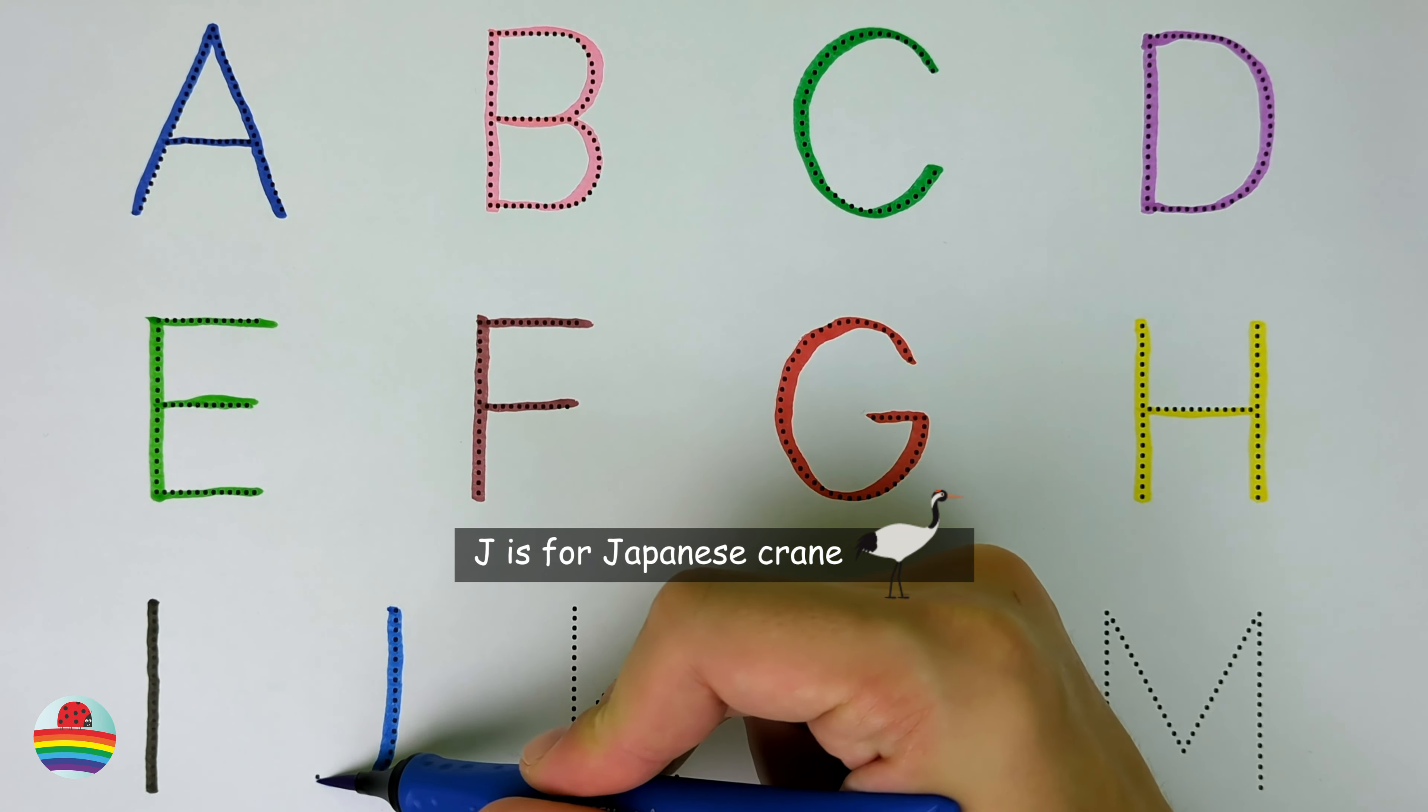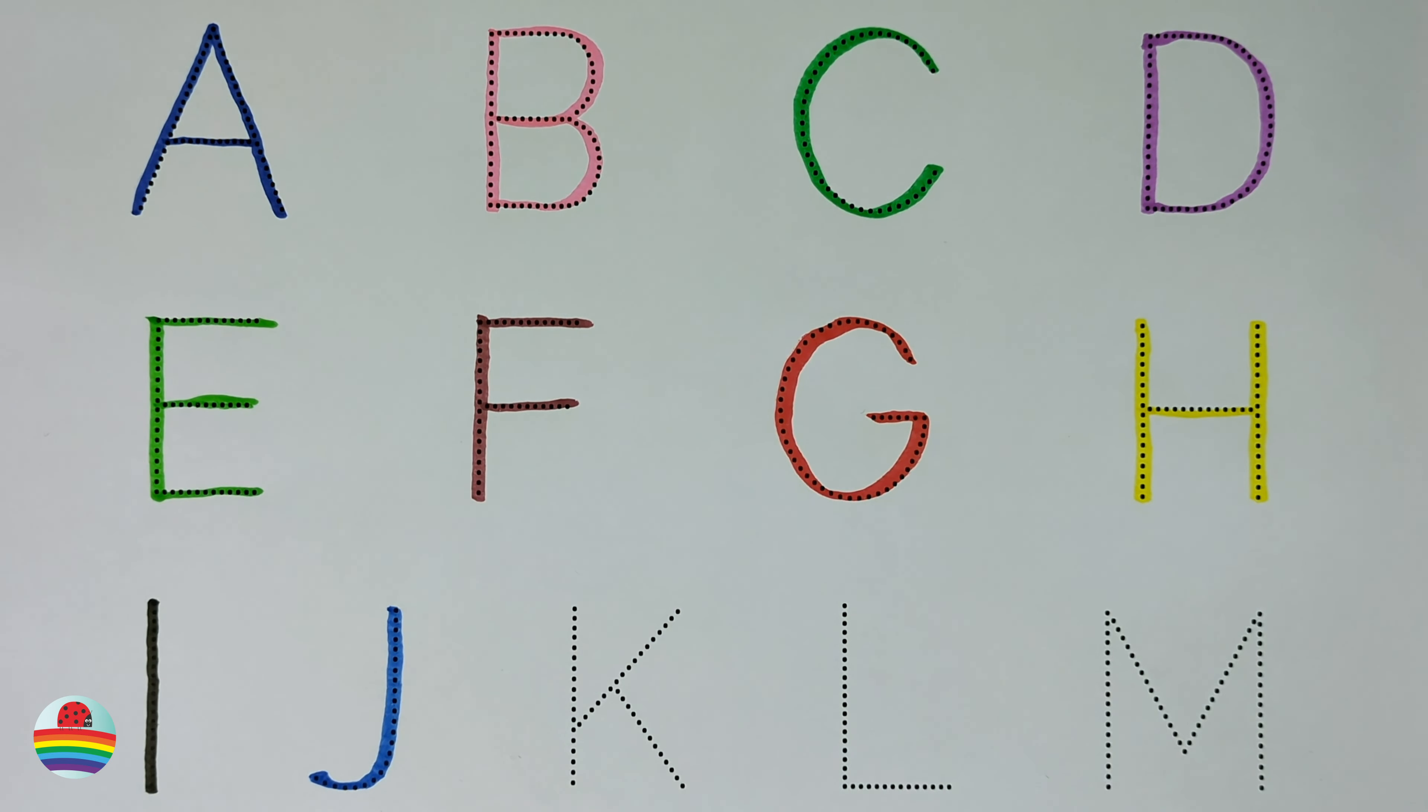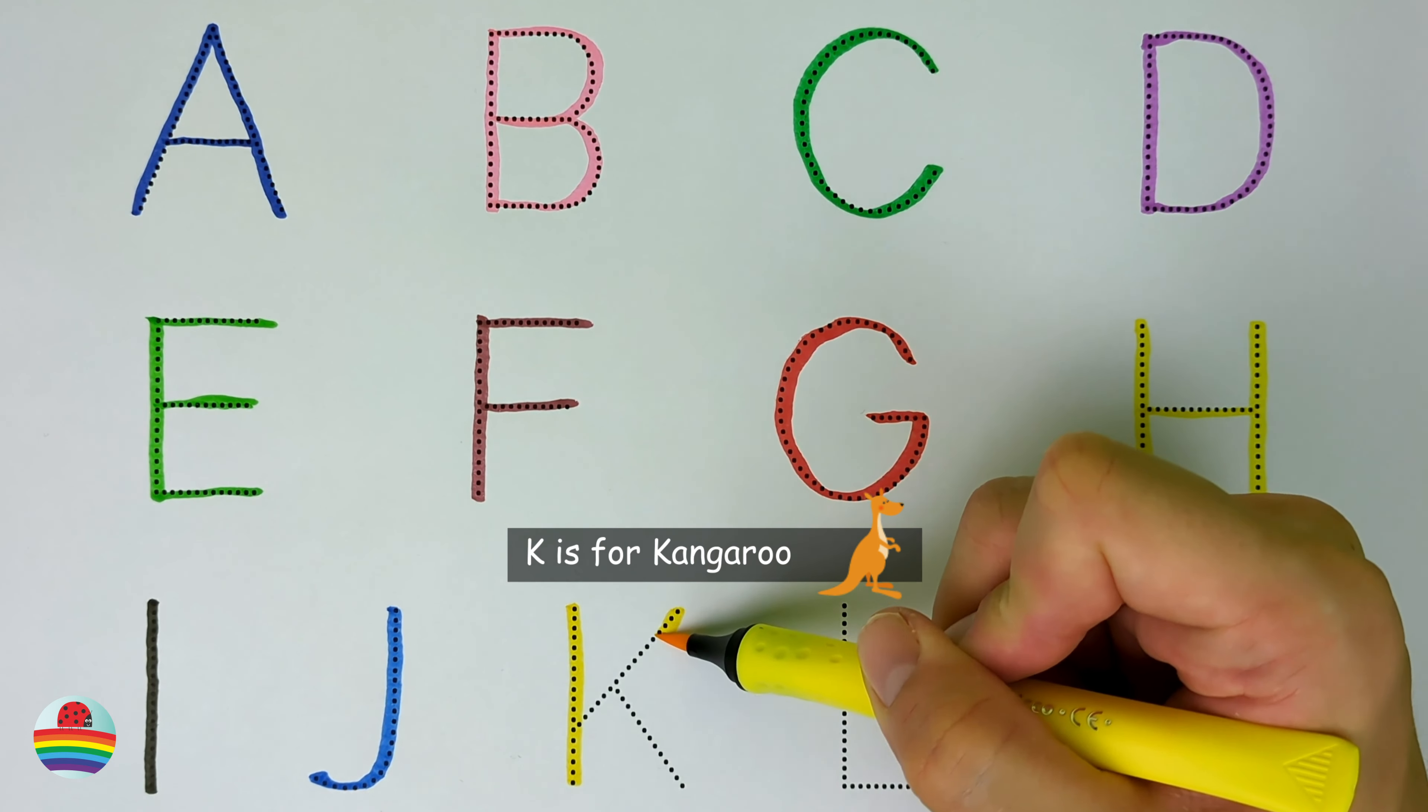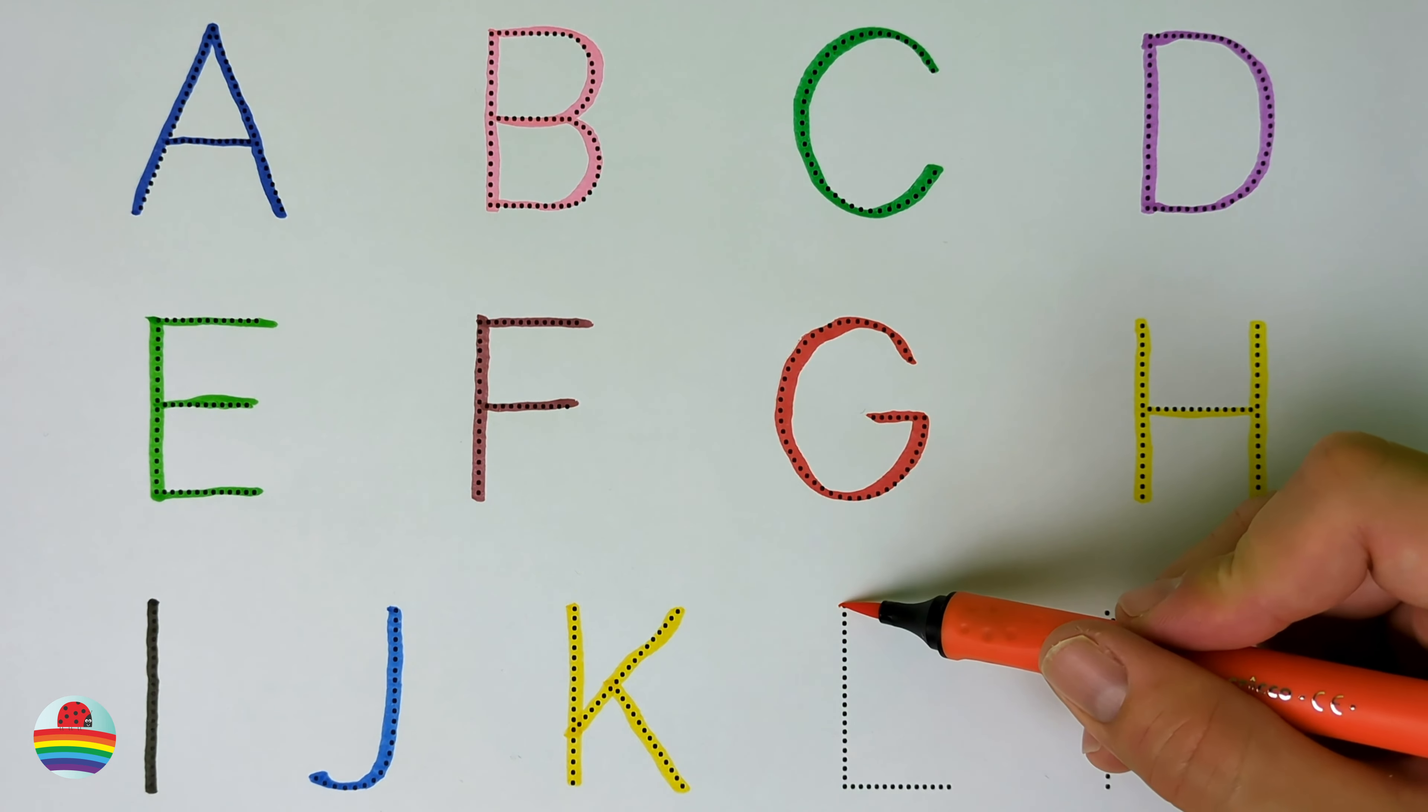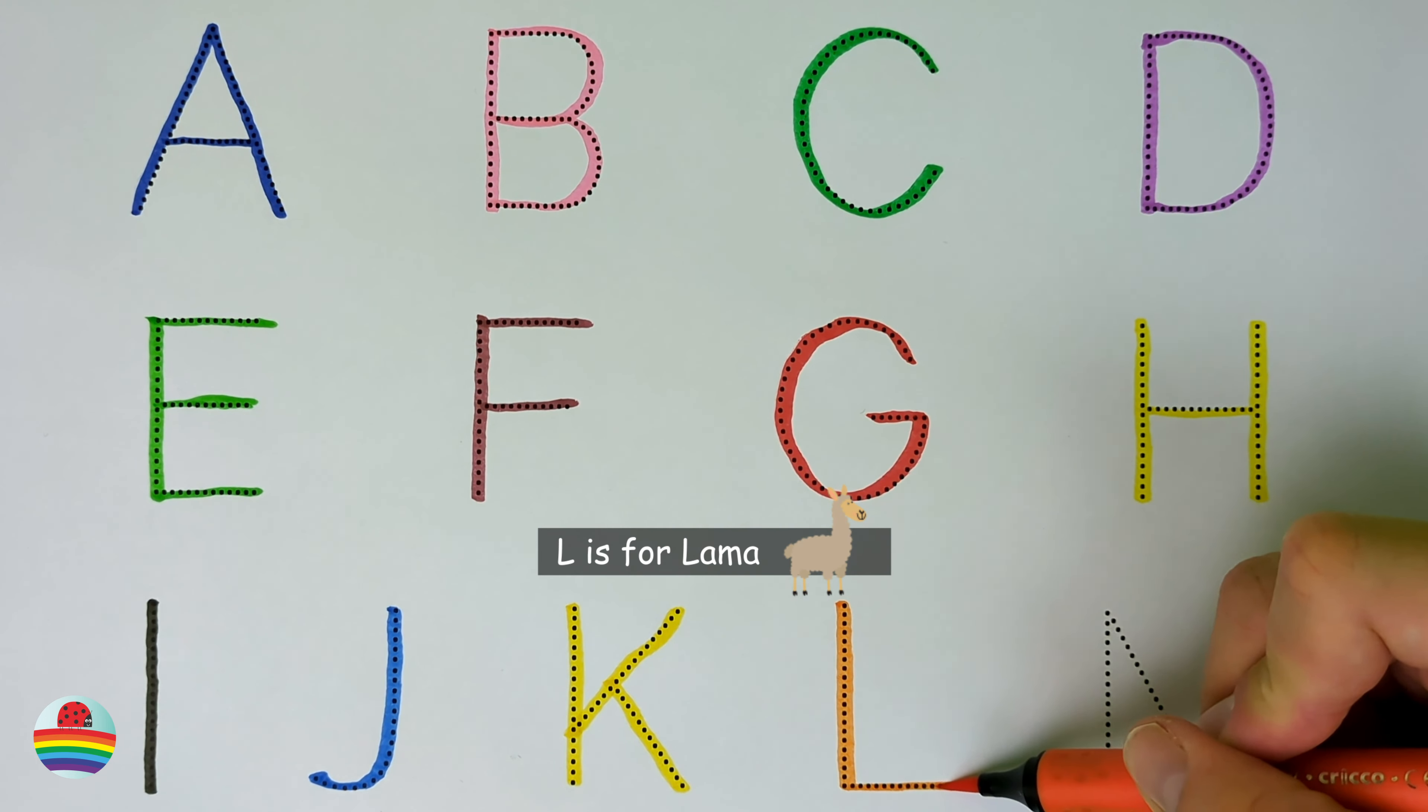J. J is for Japanese crane. J. K. K is for kangaroo. K. L. L is for llama. L.